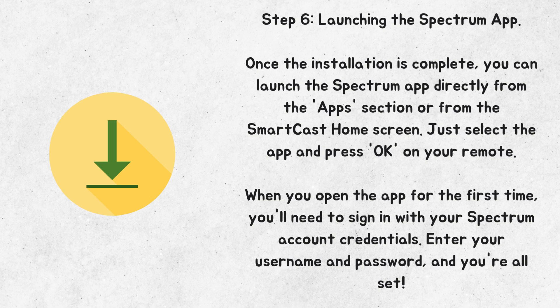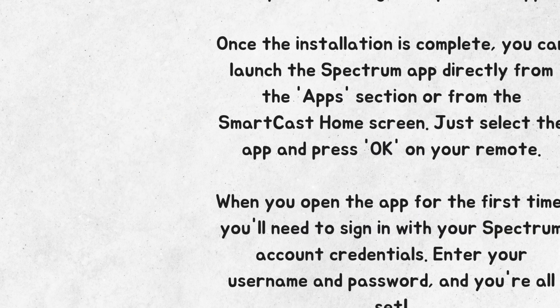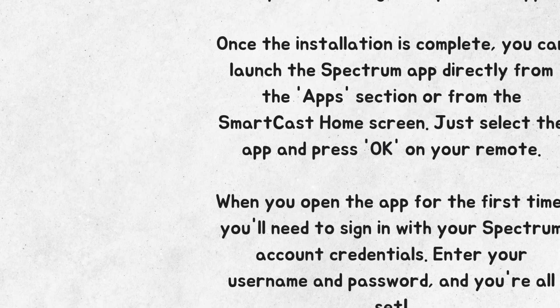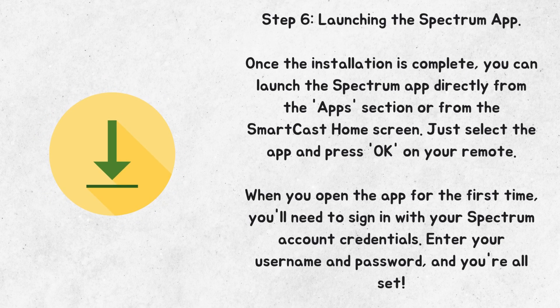Step 6: Launching the Spectrum app. Once the installation is complete, you can launch the Spectrum app directly from the App section or from the Smartcast Home screen. Just select the app and press OK on your remote. When you open the app for the first time, you'll need to sign in with your Spectrum account credentials. Enter your username and password and you're all set.